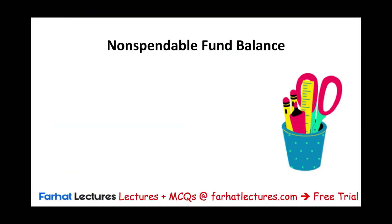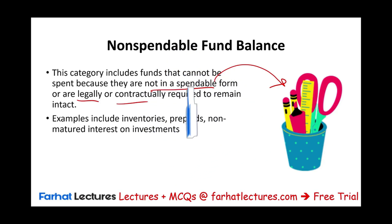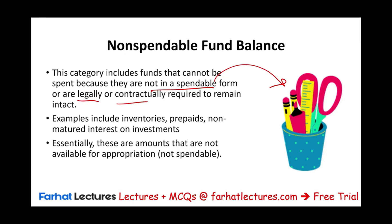Starting with the non-spendable fund balance: this category includes funds that cannot be spent because they are not in spendable form. For example, the government will have supplies, inventory, material — they cannot spend those; they're just not in spendable form. Or they are legally or contractually not spendable. Think if someone contributed money to the government and said you can only spend the interest — the principal, let's say five million dollars, cannot be touched. It's considered non-spendable. These amounts are not available for appropriation or spending, just by law or by their nature.